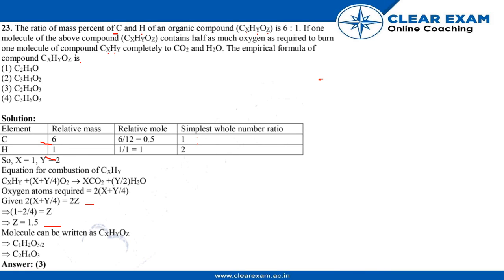Therefore, we will multiply the whole formula by 2 to form the empirical formula. We will have CₓHᵧOᵧ as C₂H₄O. Therefore, we will go with answer number 3 is correct. Thank you everyone.